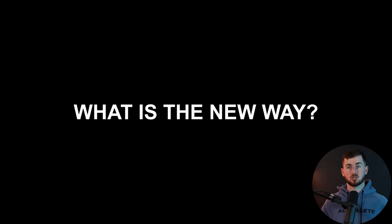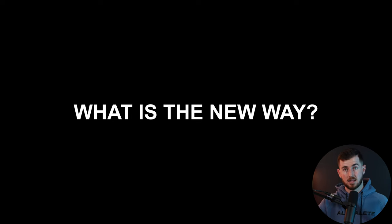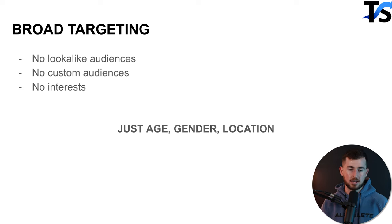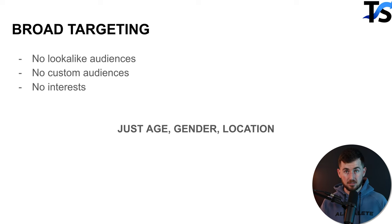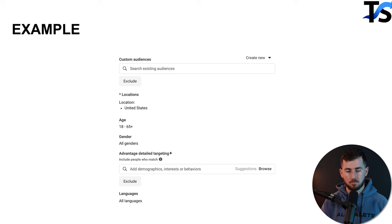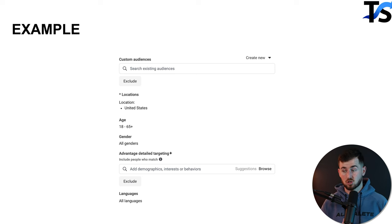So what is the new way of targeting in 2024? It's broad targeting — no lookalike audiences, no custom audiences, no interest targeting. Literally just age, gender, and location. For example, for a unisex brand we target the United States. If you want Australian customers, you target Australia.